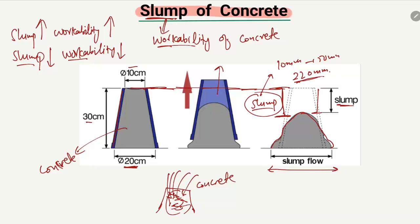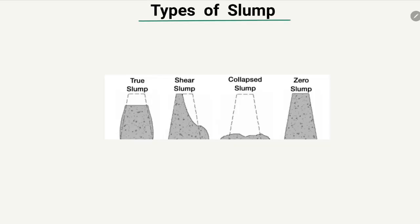Now, what are the different types of the slump of concrete? There are four basic types: one is true slump, the second is shear slump, the third is collapse slump, and the fourth is zero slump. The difference between these types depends on how the concrete reduces in height from the original height after the cone is removed.